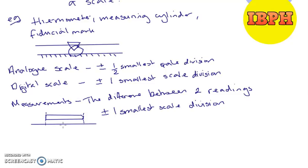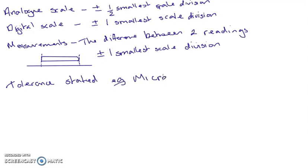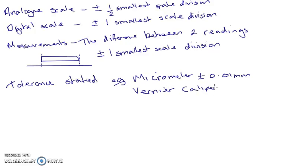If at any point you've got a piece of equipment with a tolerance stated — for example, on a micrometer, the ones we have at my college have a tolerance stated on the box of plus or minus 0.01 millimetres, and for our vernier calipers we have a tolerance of plus or minus 0.02 millimetres — in those cases you use the tolerance stated. Always use a tolerance that's stated.